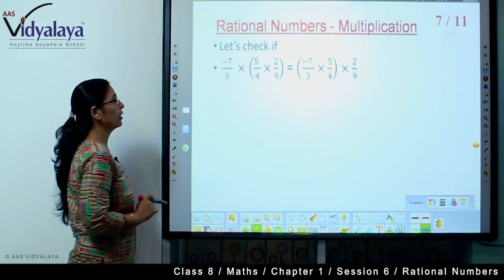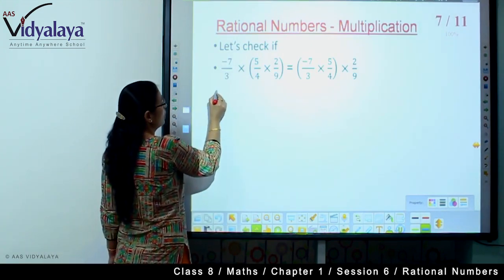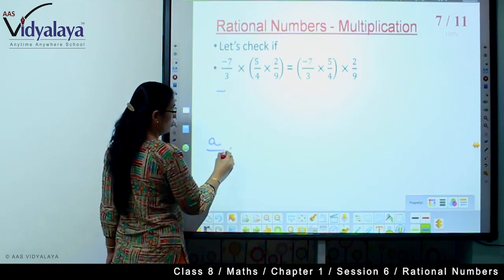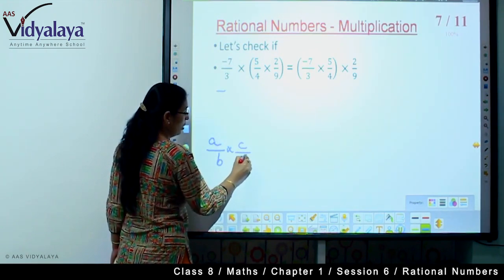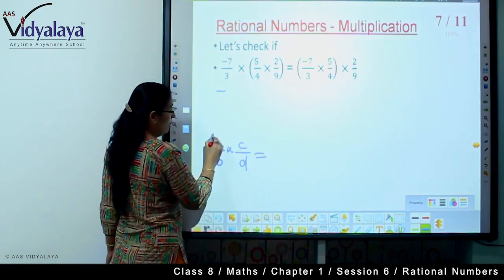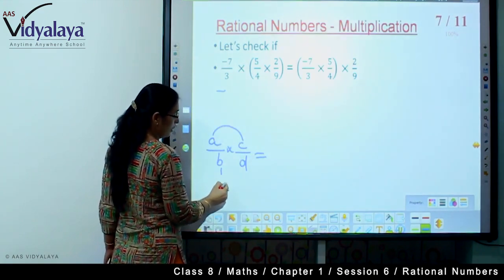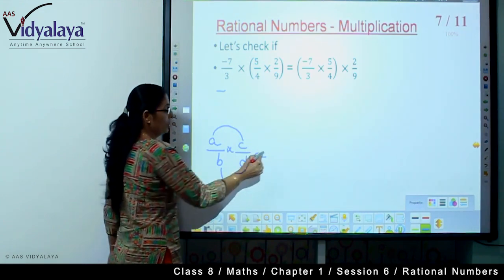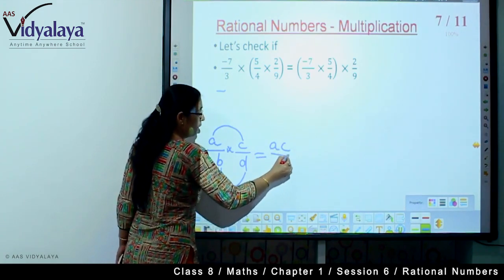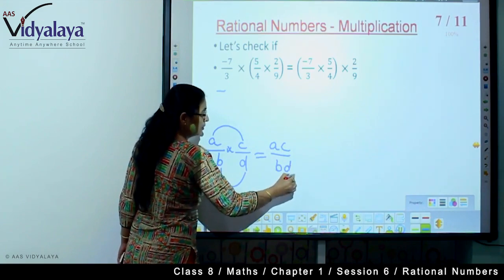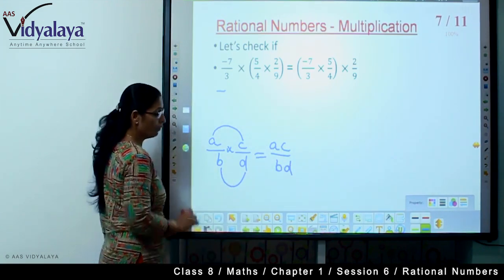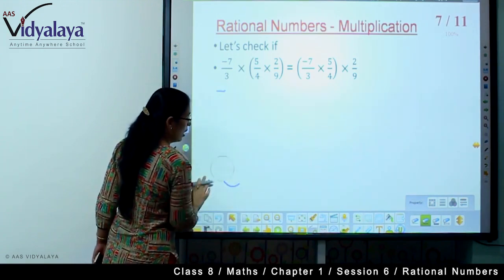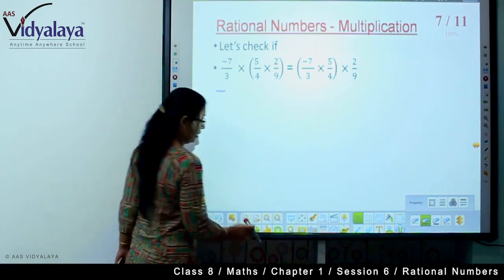So what do we learn? Subtraction is not associative for rational numbers. This means we cannot say A minus bracket B minus C will be equal to A minus B minus C. In subtraction we cannot show the association.